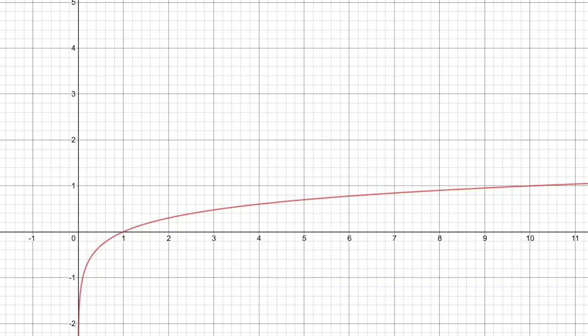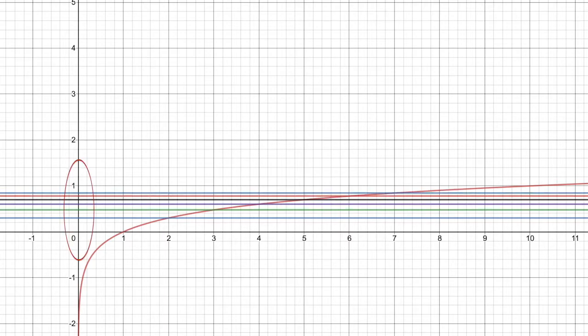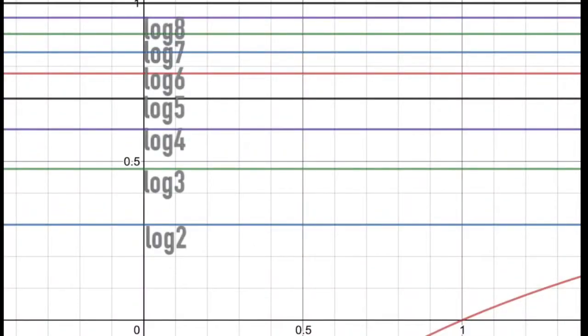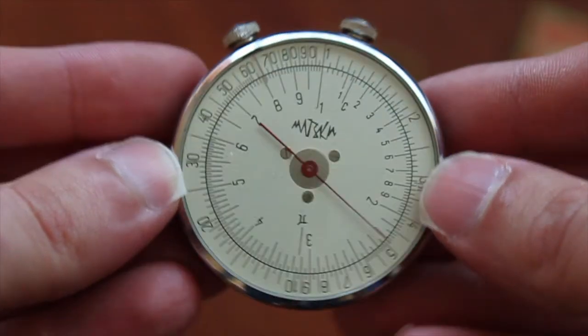If you want to construct a logarithmic scale, you just take a graph of y equals log x, and build horizontal lines corresponding to log 1, log 2, log 3, and so on. So, this line here contains integers from 1 to 10 in logarithmic scale. And our device has this scale up to 100, but it is put out on a circle instead of a line.